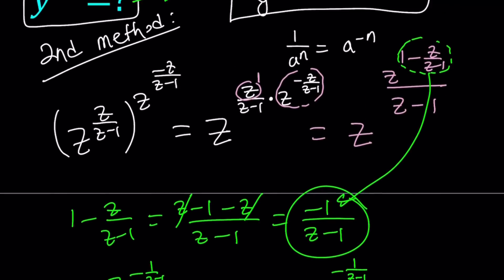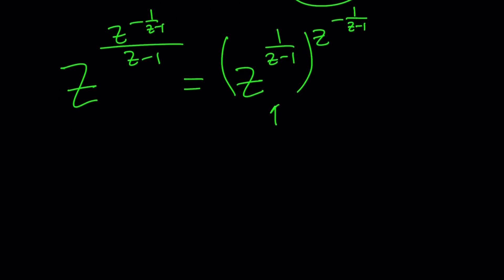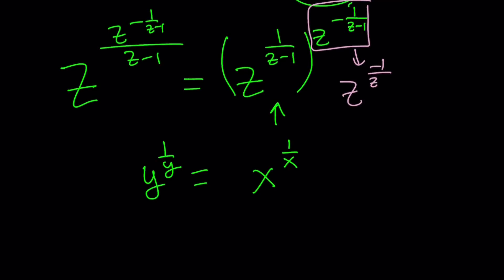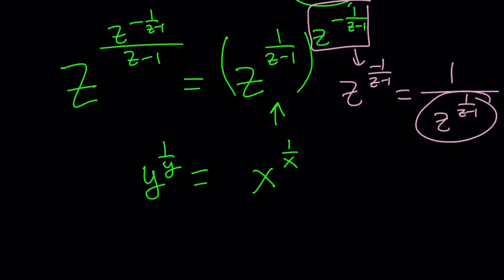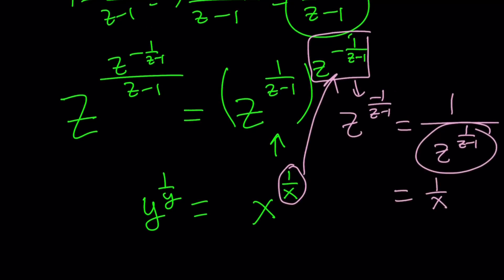The inside is x, since x equals exactly z to the power 1 over z minus 1. As for the exponent, it's the same expression but with a negative numerator — negative 1 over something — which is just the reciprocal, so it equals 1 over x. We took z to the power negative 1 over z minus 1 and wrote it as 1 over z to the power 1 over z minus 1, which equals 1 over x. So y to the power 1 over y turns out to be x to the power 1 over x.